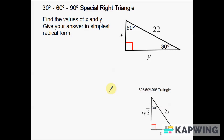In this video I'm going to do two different examples using our 30, 60, and 90 triangles. The directions are basically going to be the same for both examples: find the values of x and y, give your answers in simplest radical form. So no decimals — we're just going to use radicals.